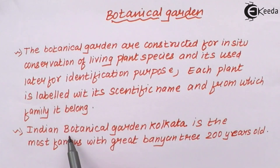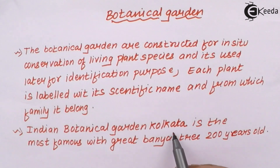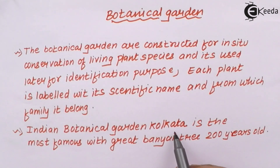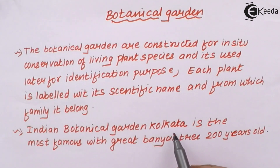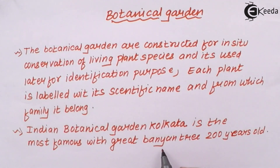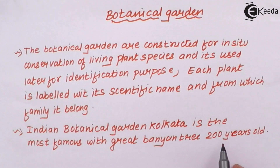The famous botanical garden in India is located in Kolkata, famous for its various trees, herbs, and shrubs with great medicinal values and ecological and scientific research values, along with a banyan tree approximately 200 years old. There is a lot of research going on in and around this banyan tree.